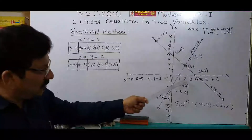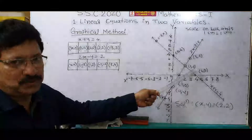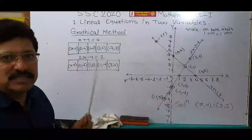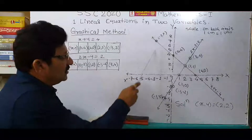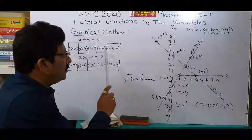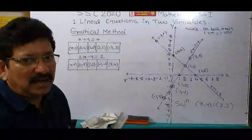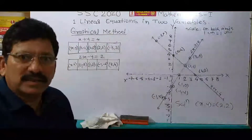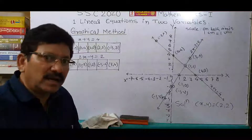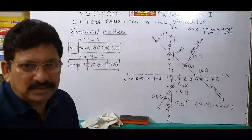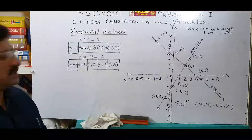The third point is (2, 2): 2 on the x-axis and 2 on the y-axis — this is the point. And the last one, (minus 3, 7): minus 3 on the x-axis and 7 on the y-axis. We have plotted all 4 points and then drawn a line passing through all these 4 points. Now proceed for the next equation: 2x minus y is equal to 2. Here are its 4 ordered pairs.